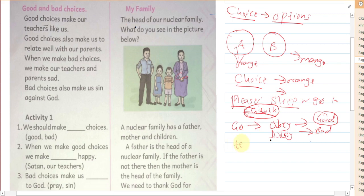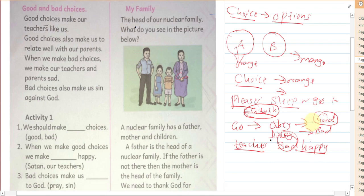We make our teachers and parents sad when we make bad choices. For example, if the teacher says, 'Can you go and bring the cane so we can discipline someone?' and you say, 'No, teacher, I'm not going,' that is a case of indiscipline and it makes the teacher sad. The opposite of sad is happy. We should choose to make our teachers happy.